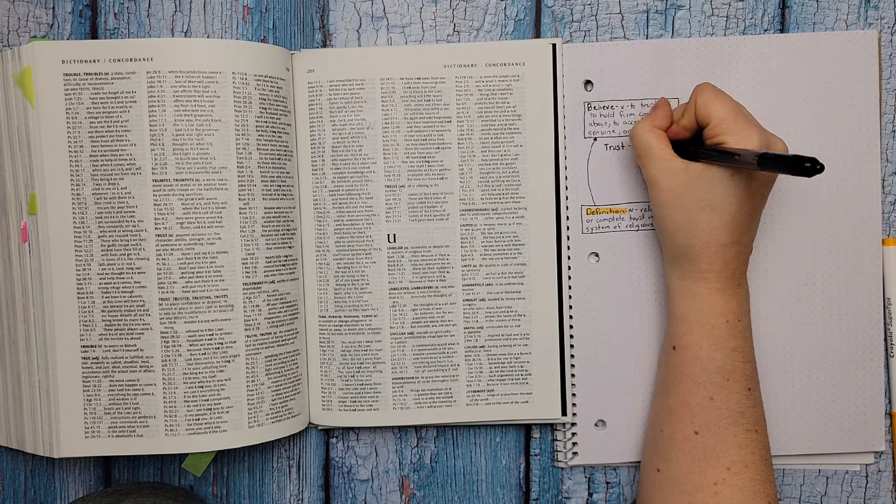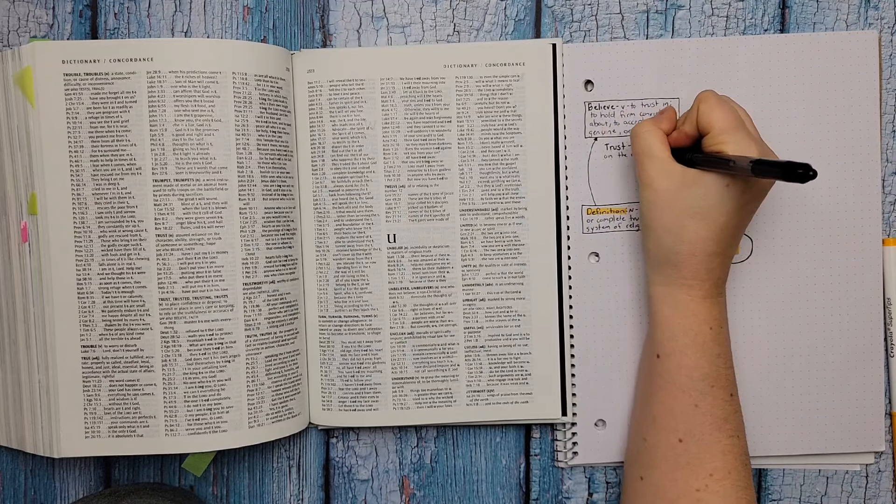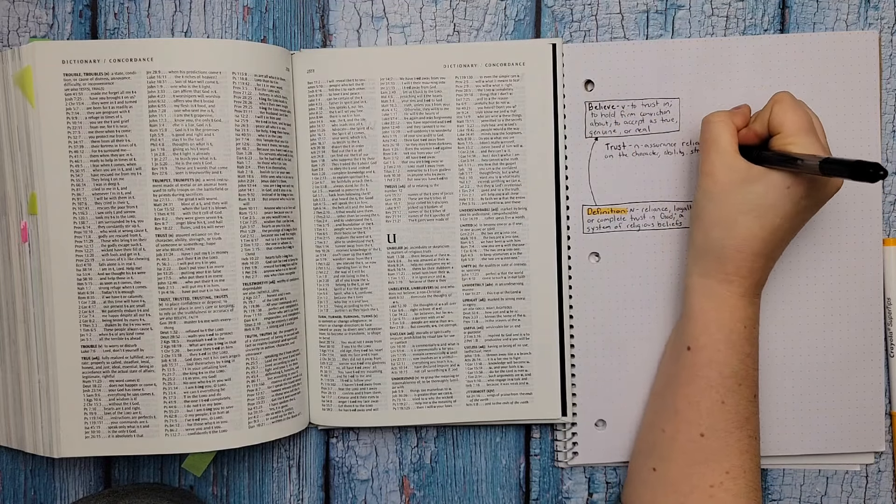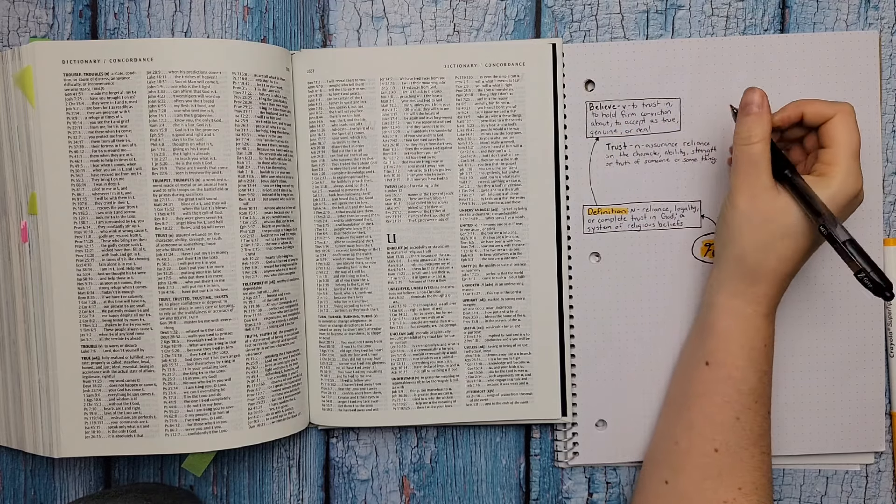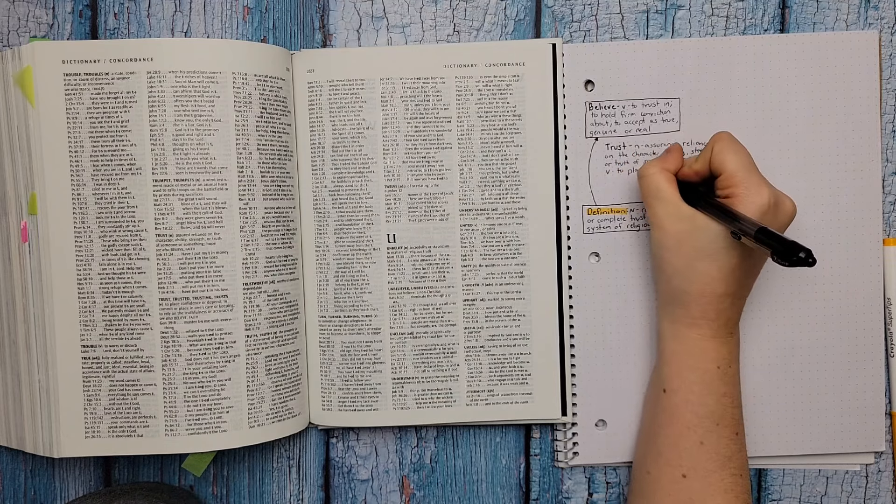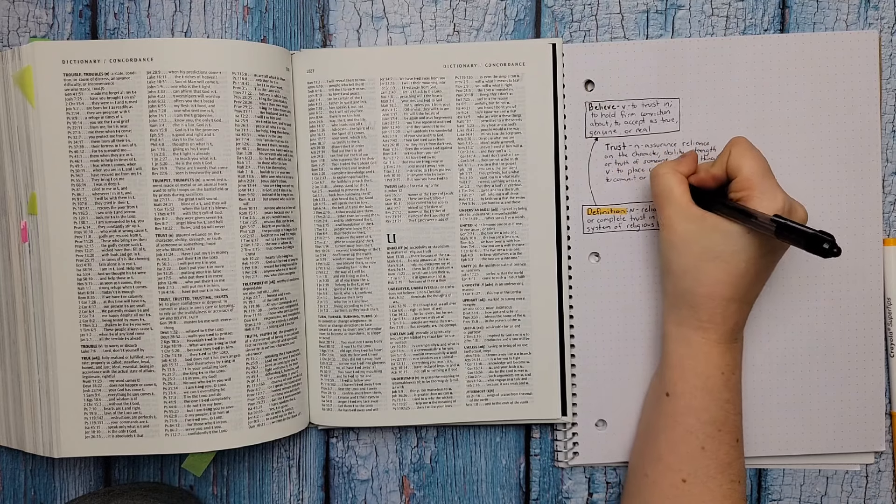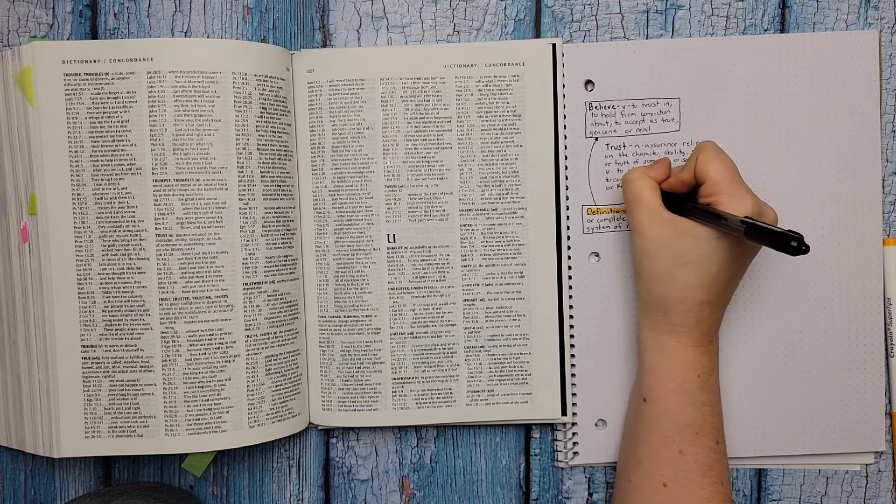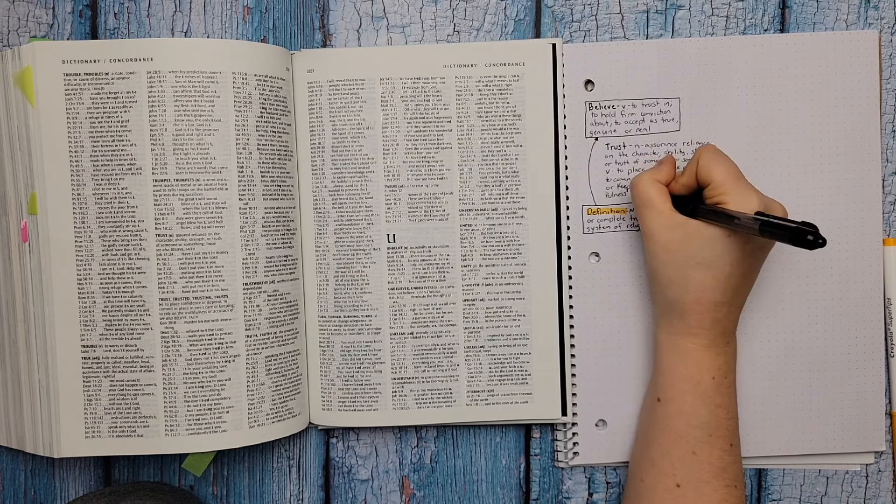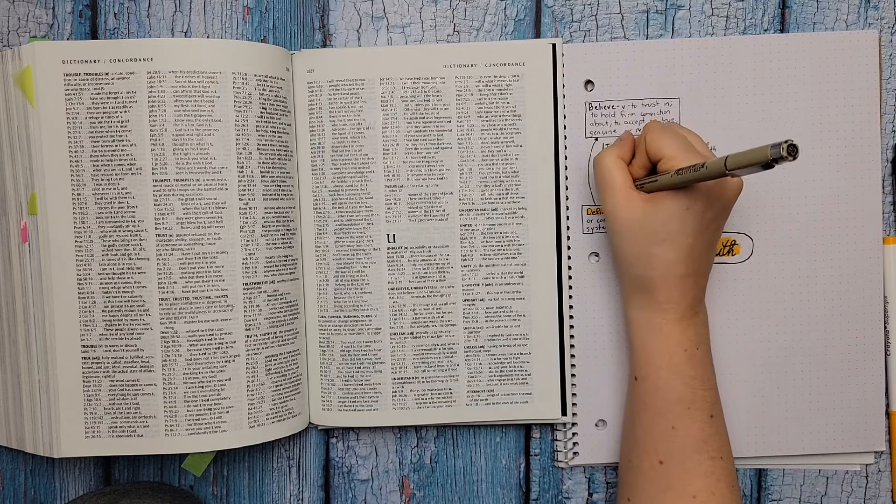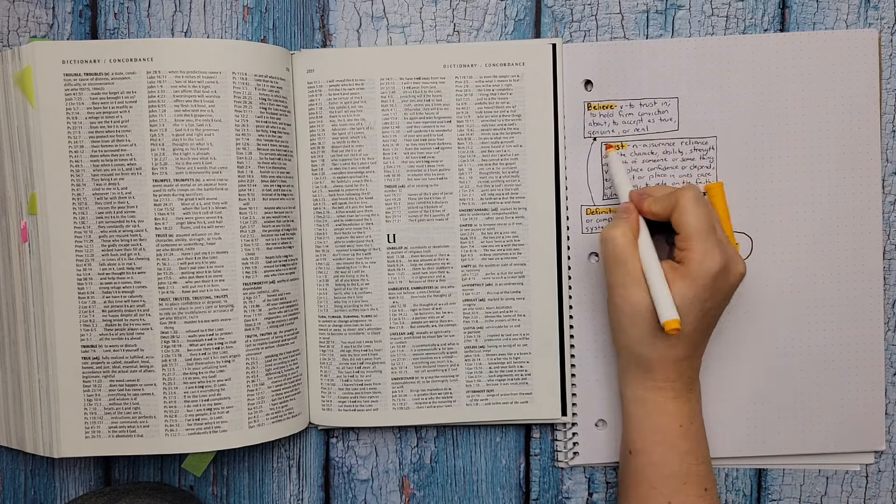And then we're going to do the next word which is trust. There is more than one definition for trust because it's a noun and also a verb. So noun is assurance, reliance on the character, ability, strength, or truth of someone or something. And then the verb is to place confidence or depend, to commit or place in one's care or keeping, to rely on the faithfulness or accuracy of. So as you can see, believe and trust and faith, they all really do connect in a way. So we're going to just draw another arrow to connect those and add some color.